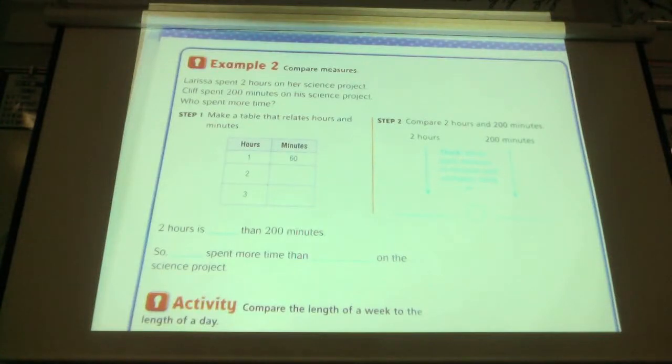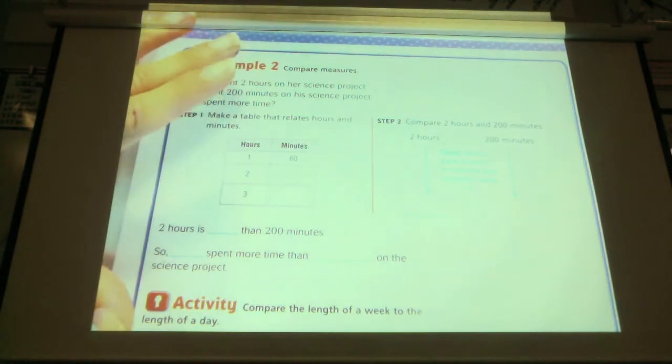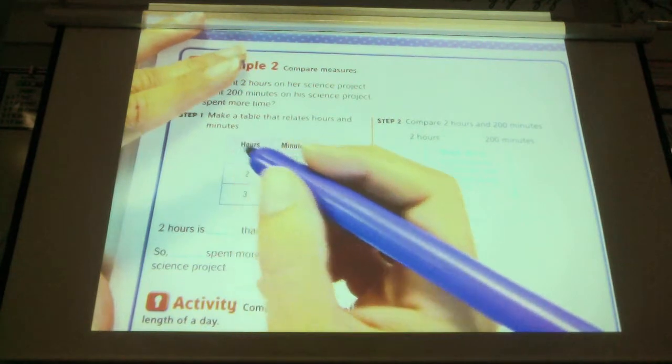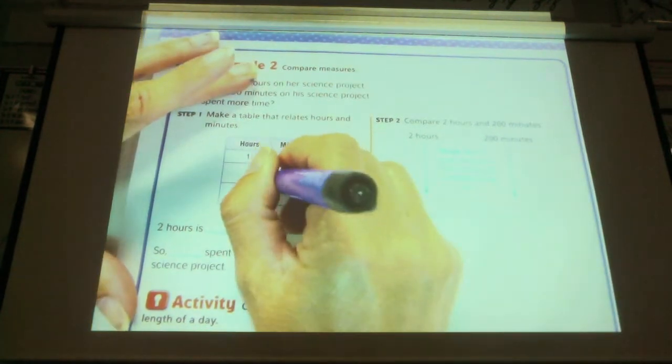Larissa spent two hours on her science project. Cliff spent 200 minutes on his science project. Who spent more time? They've done a chart to help you figure this out. If you're struggling with, how do I figure this out, you can do yourself a little chart. One hour equals 60 minutes. So, two hours would equal how many? Raise your hand.